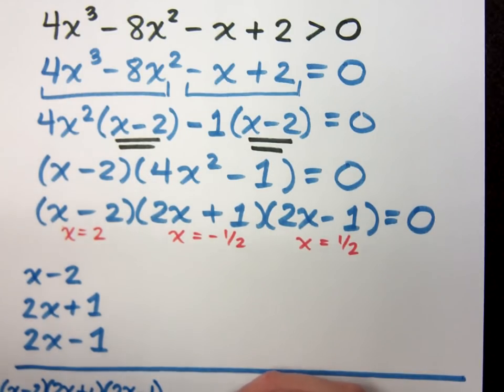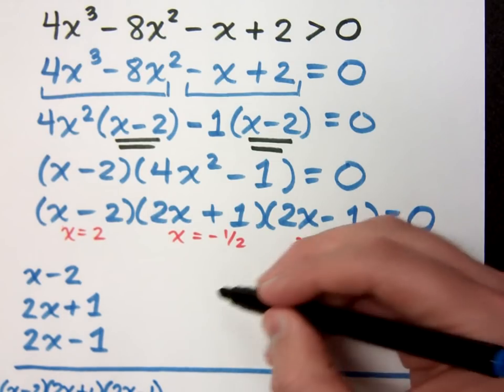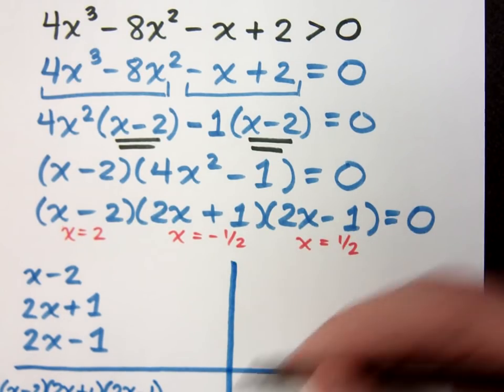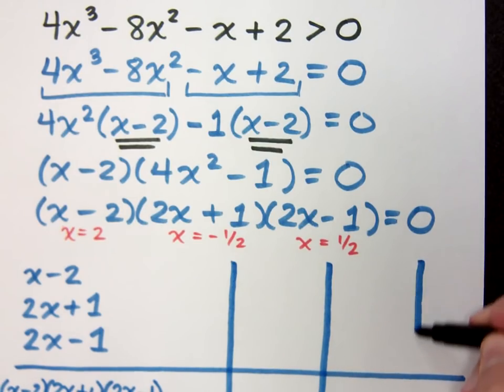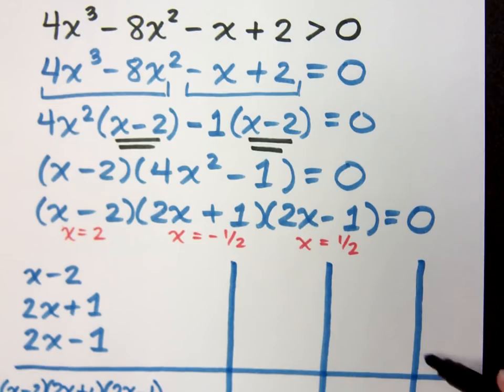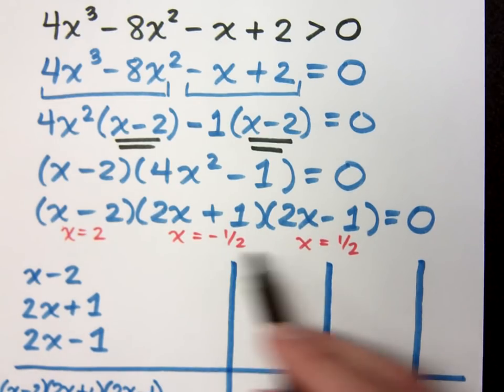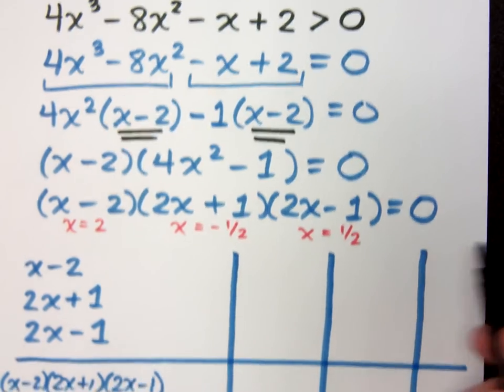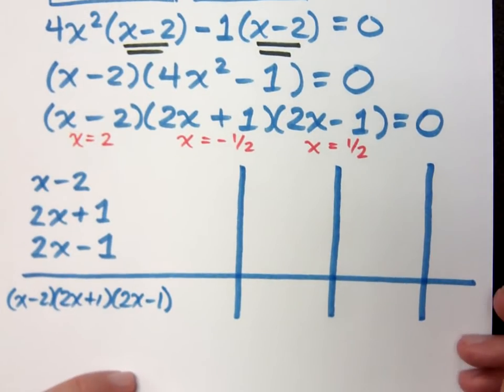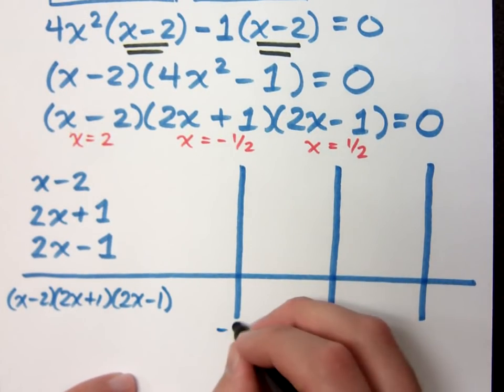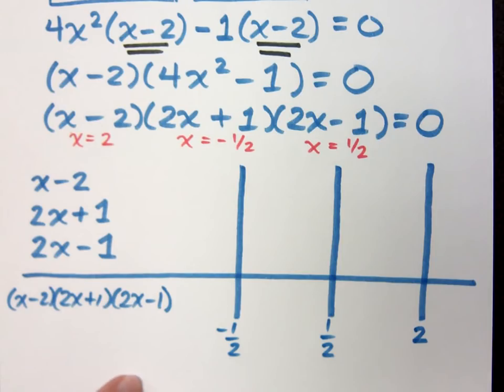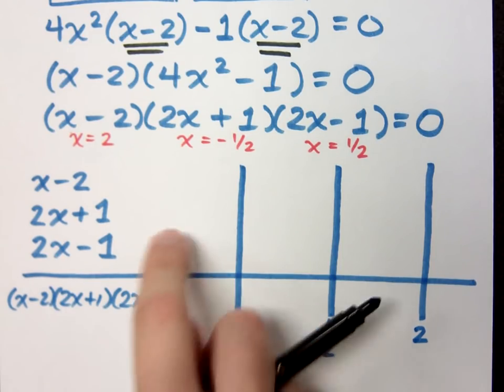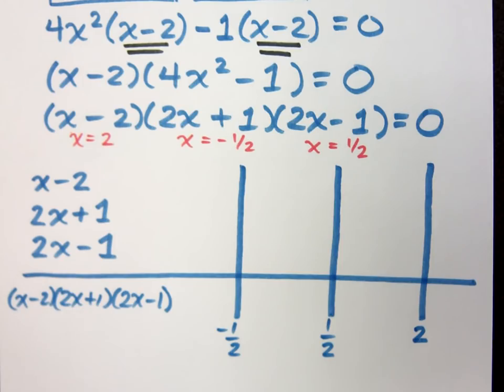Okay? So we have three key values that we're concerned with. So let's make sure that we divide this up appropriately. Now my key values occur at 2, negative 1 half, and 1 half, but you've got to make sure you do these guys in order. When I do these in order, I get negative 1 half is the leftmost one, positive 1 half, and then 2. So we've got four intervals, and I just want to worry about doing the signs. We can do that.